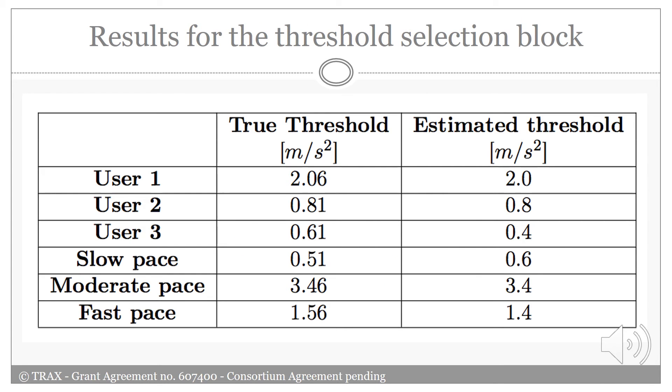In this table, the estimated thresholds from minimizing the likelihood cost function are compared to the true thresholds obtained from counting the total number of steps during the experiments. It can be observed that the estimated thresholds are in good agreement with the true ones. And hence, the criteria given in the likelihood cost function seems to be a good indicator to choose the step detection threshold.